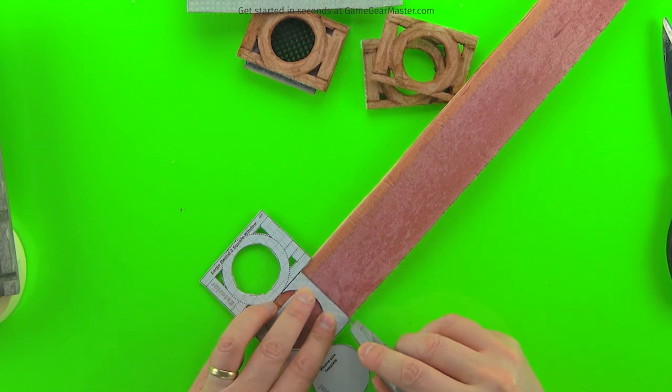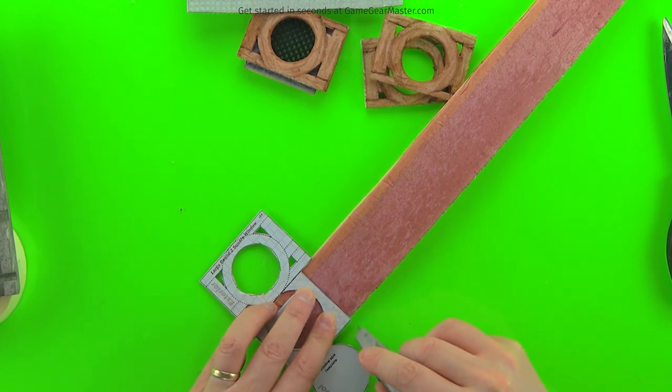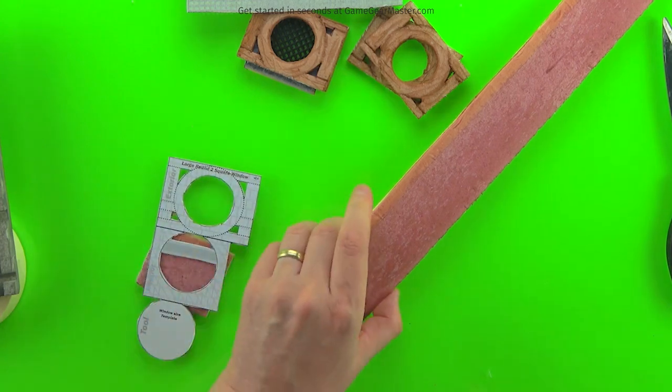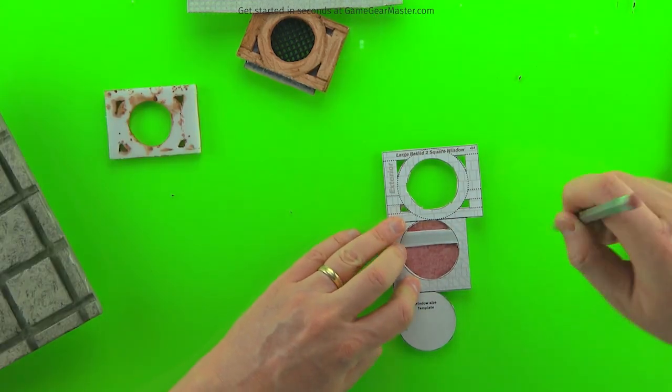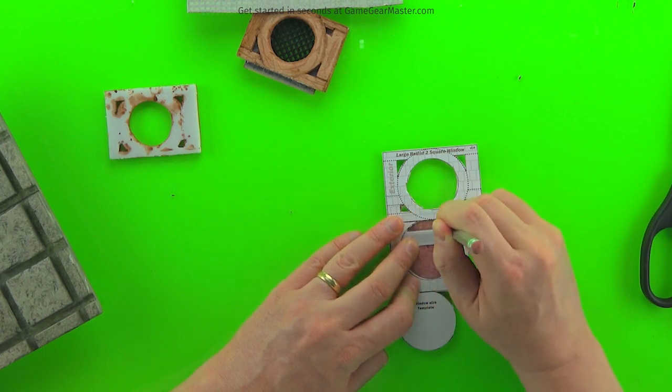The circular window is pretty much the same, except for on that interior wall piece I like to trace out that circle and then cut it. It's a lot easier than trying to cut a circle out of a template with your knife while holding it.